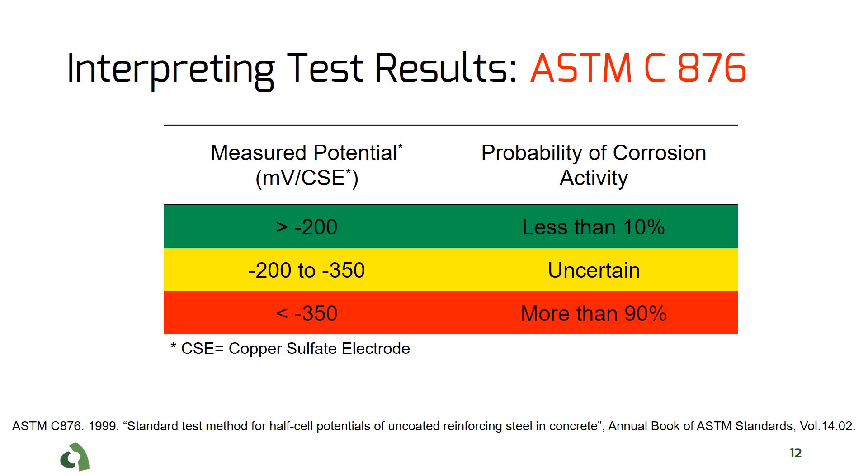When measurement is higher than negative 200 millivolts, this probability is less than 10%. Results for half-cell potential values between negative 200 millivolts to negative 350 millivolts is uncertain.